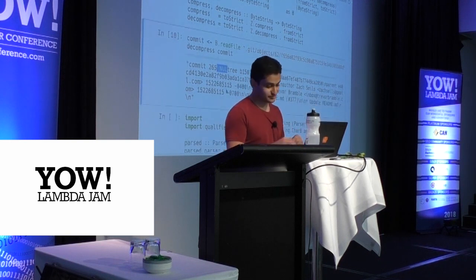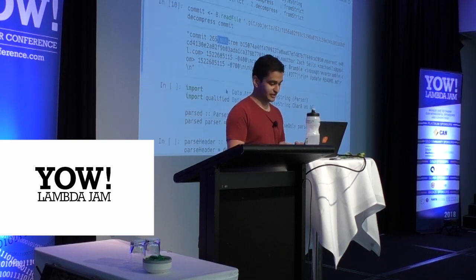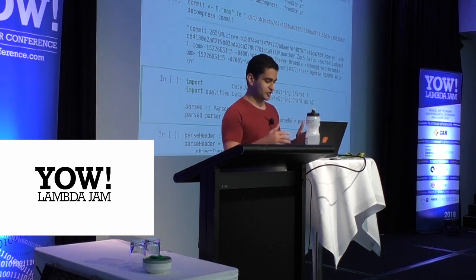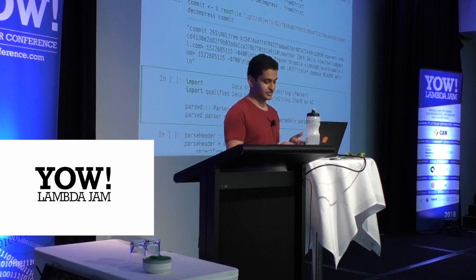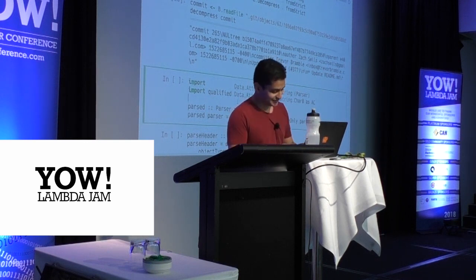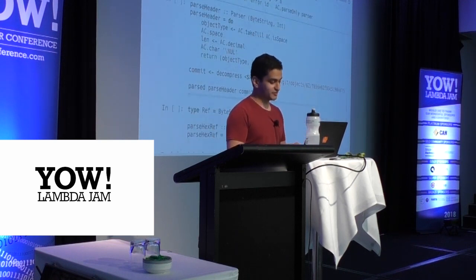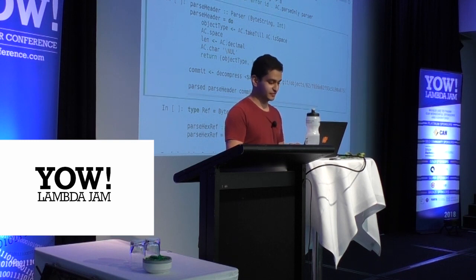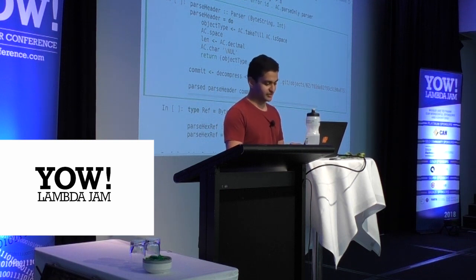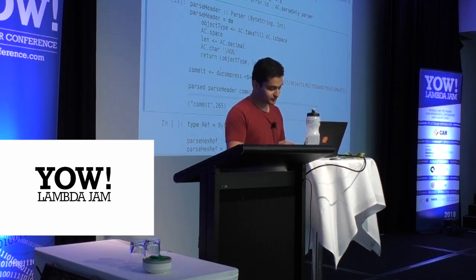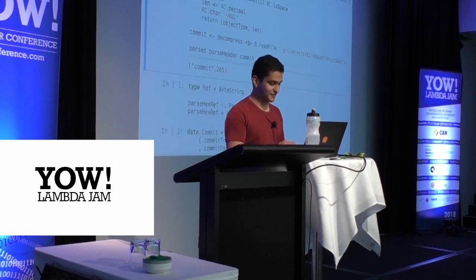I want to parse this. In Haskell, I'll use Attoparsec. I'm going to write parsers that don't fail. To parse a header: I parse everything until a space, parse the space, parse a number, parse the null byte, and return a tuple containing the object type and the length. I parse that and get the header I expect. Next I want to parse 40 characters — just take 40 characters and pretend that's a ref.